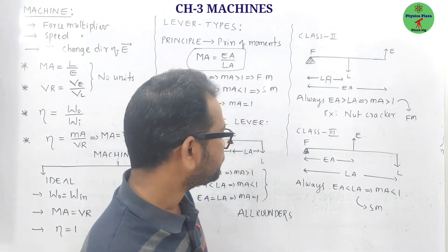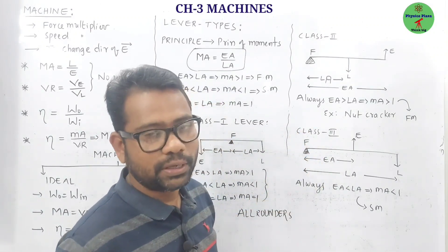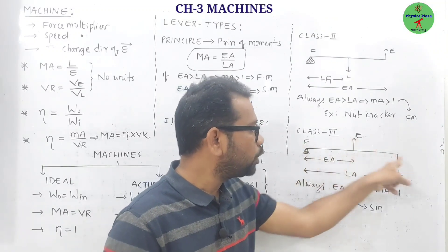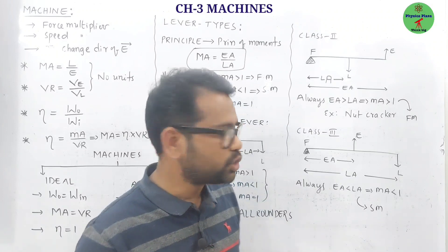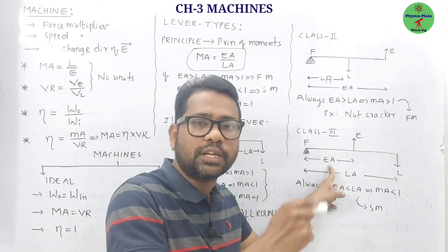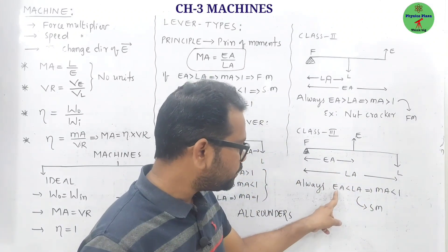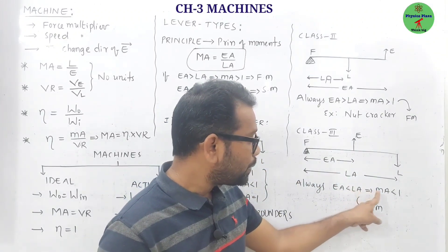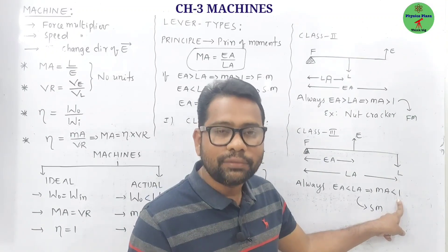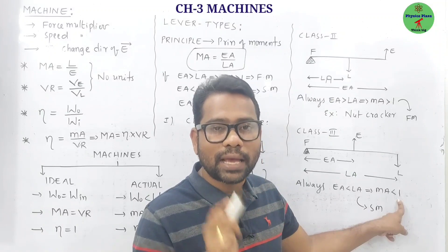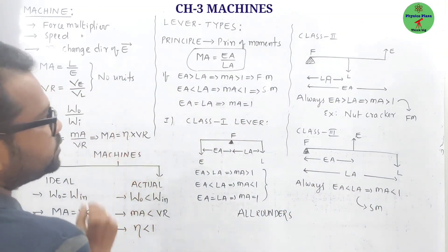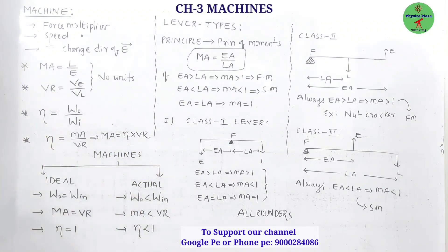In class three levers, the effort is in the middle, and the fulcrum and load are on either side. Here, the effort arm is always less than the load arm, so the mechanical advantage is always less than one. Therefore, class three levers always act as speed multipliers.